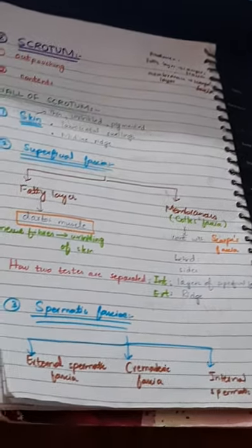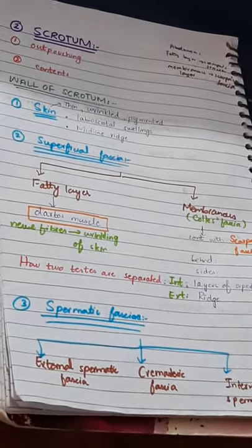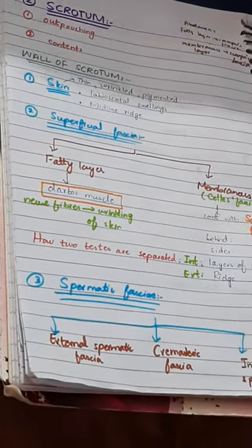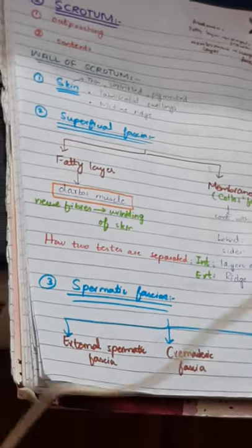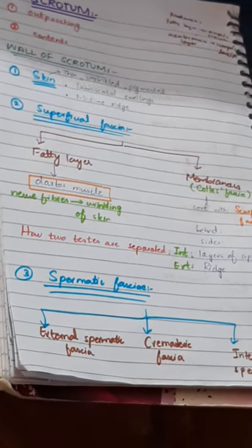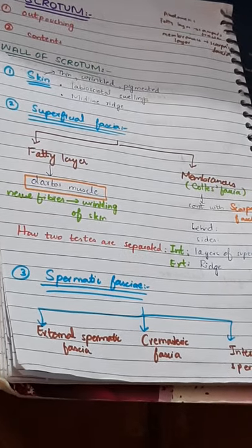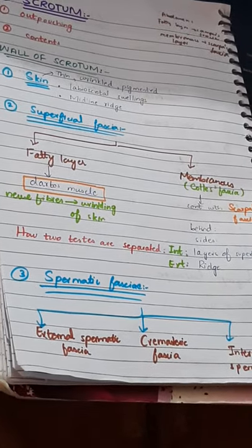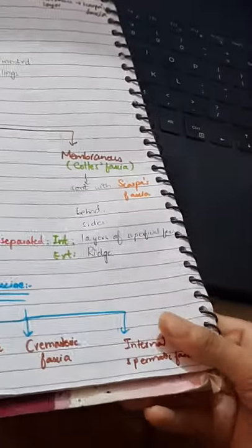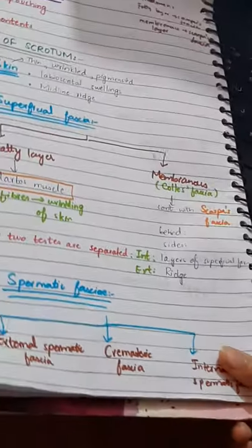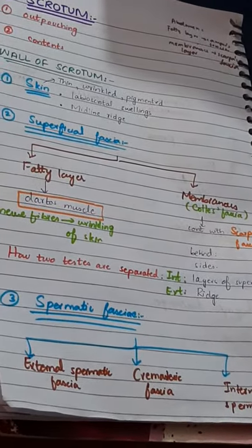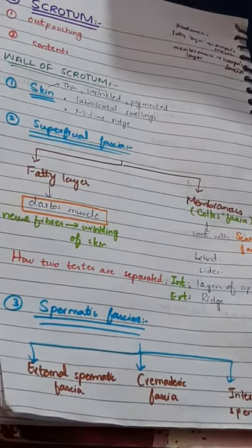Assalamu alaikum. We will start with scrotum today. We were studying the male genital system — there is internal genital system and external genital system. We are studying the external, which includes penis, scrotum, and urethra. We have already discussed penis, so let's start with scrotum.